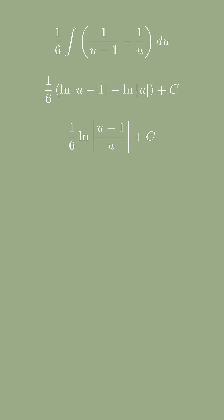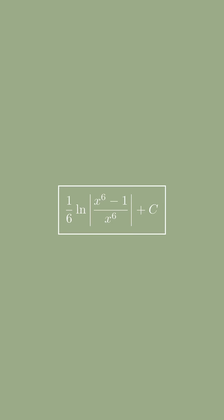Finally, substituting back u equals x to the 6, the final answer is 1 over 6 of the natural log of x to the 6 minus 1 over x to the 6 plus c.